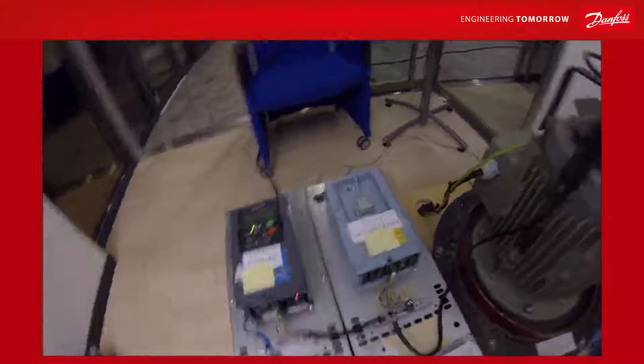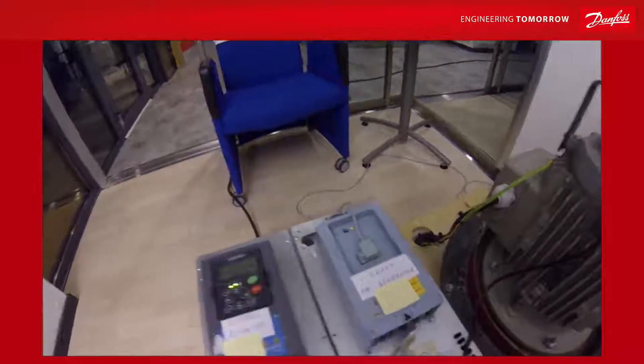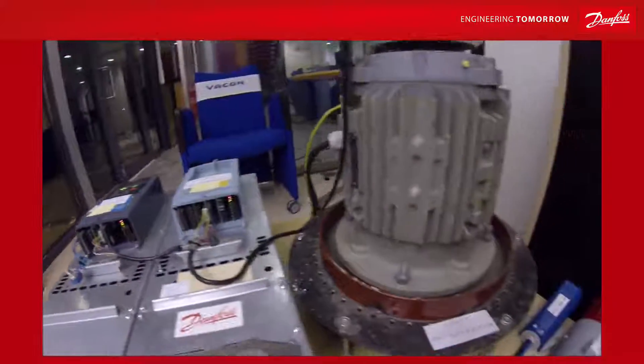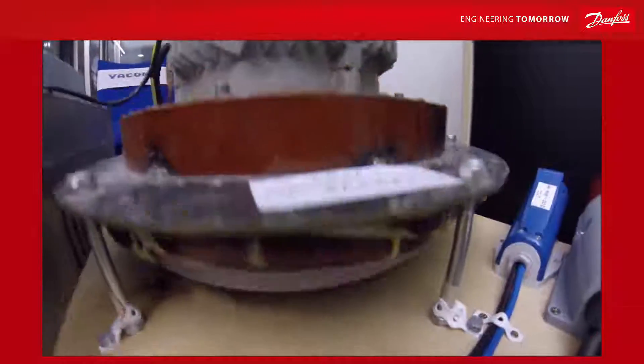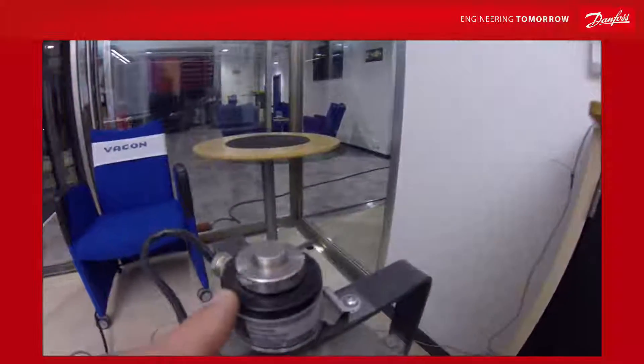What do we do then? We start the diesel engine. Then we measure what is the frequency produced by the generator at a given RPM. Then we get the relation between the RPM and the frequency.